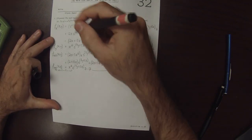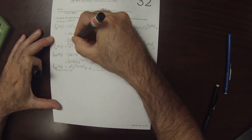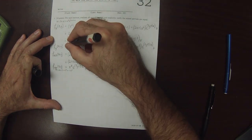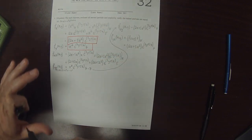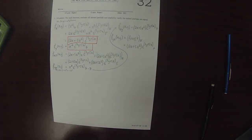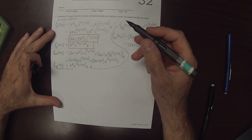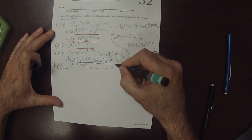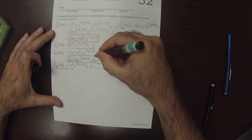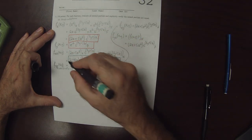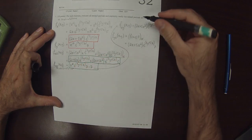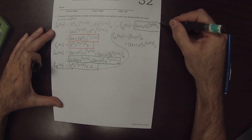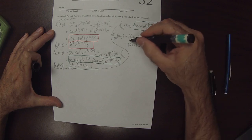The first partials are shown in red and the second partials are in green. And of course, you can see that the mixed partials are equal.